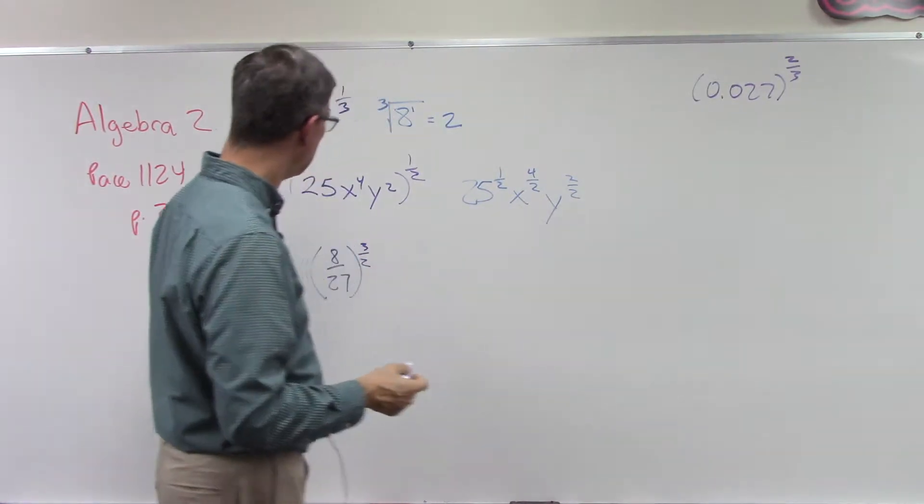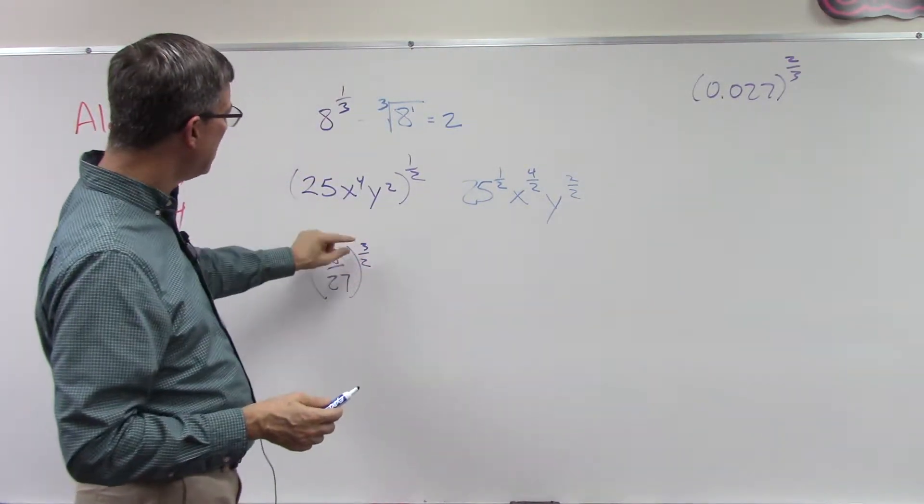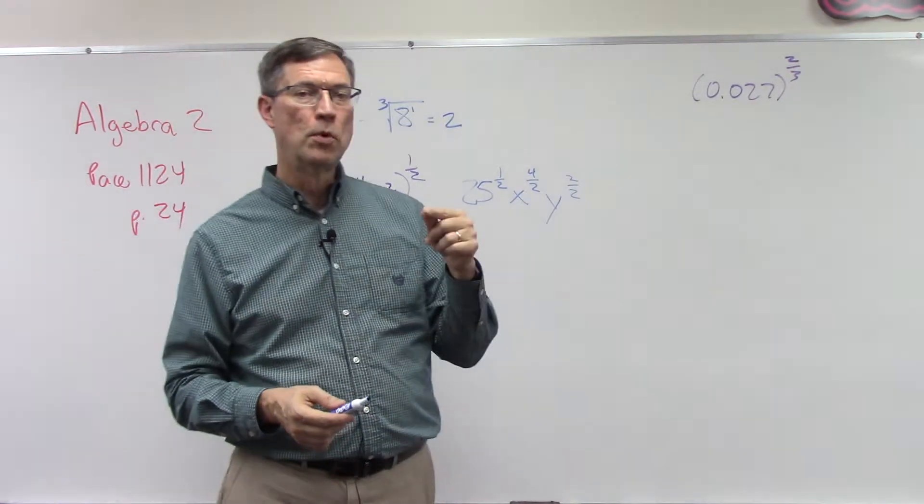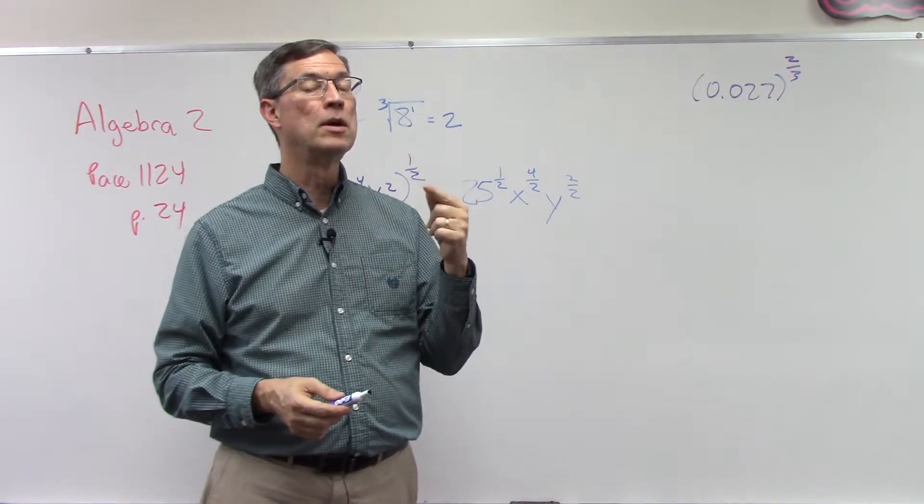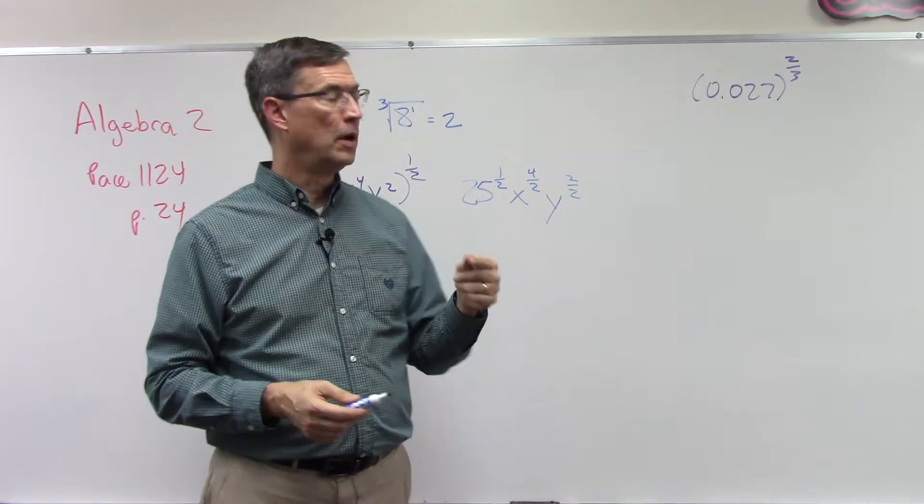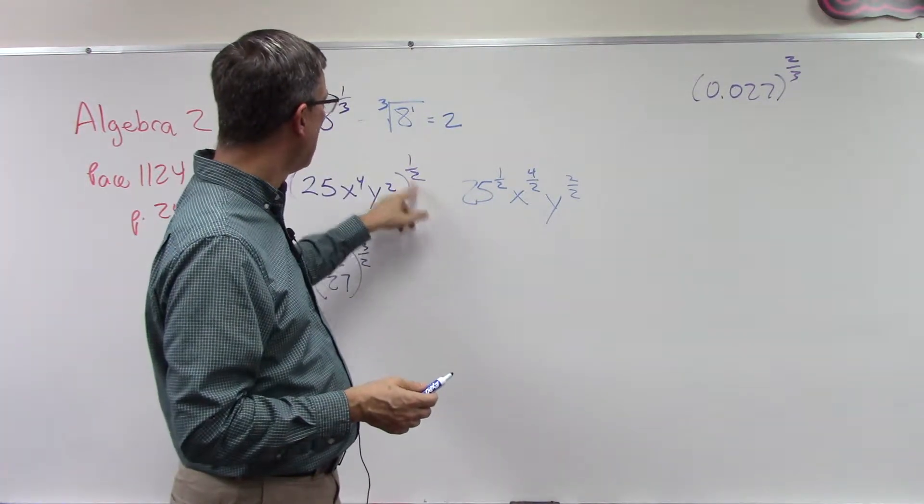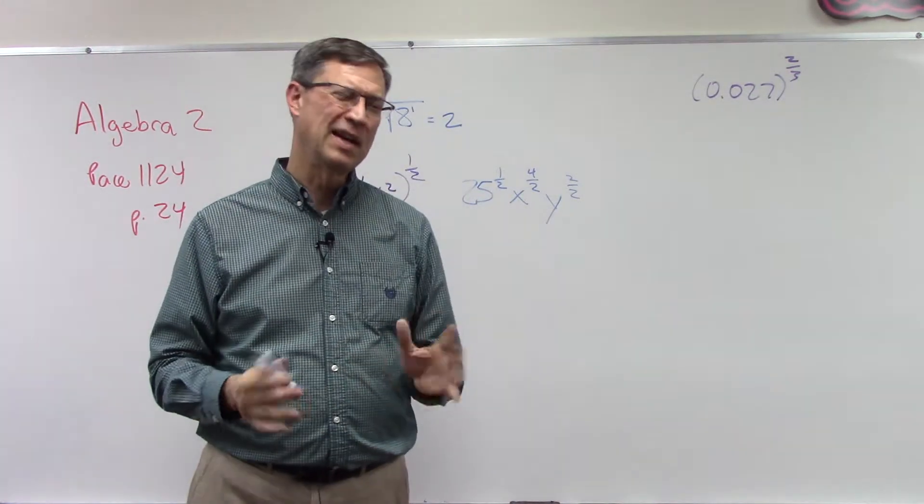Let's talk about this one. Now when we have an exponent that has a numerator that's greater than 1, so like 1/2 or 1/3, those are kind of easy. But this type we have to separate out.